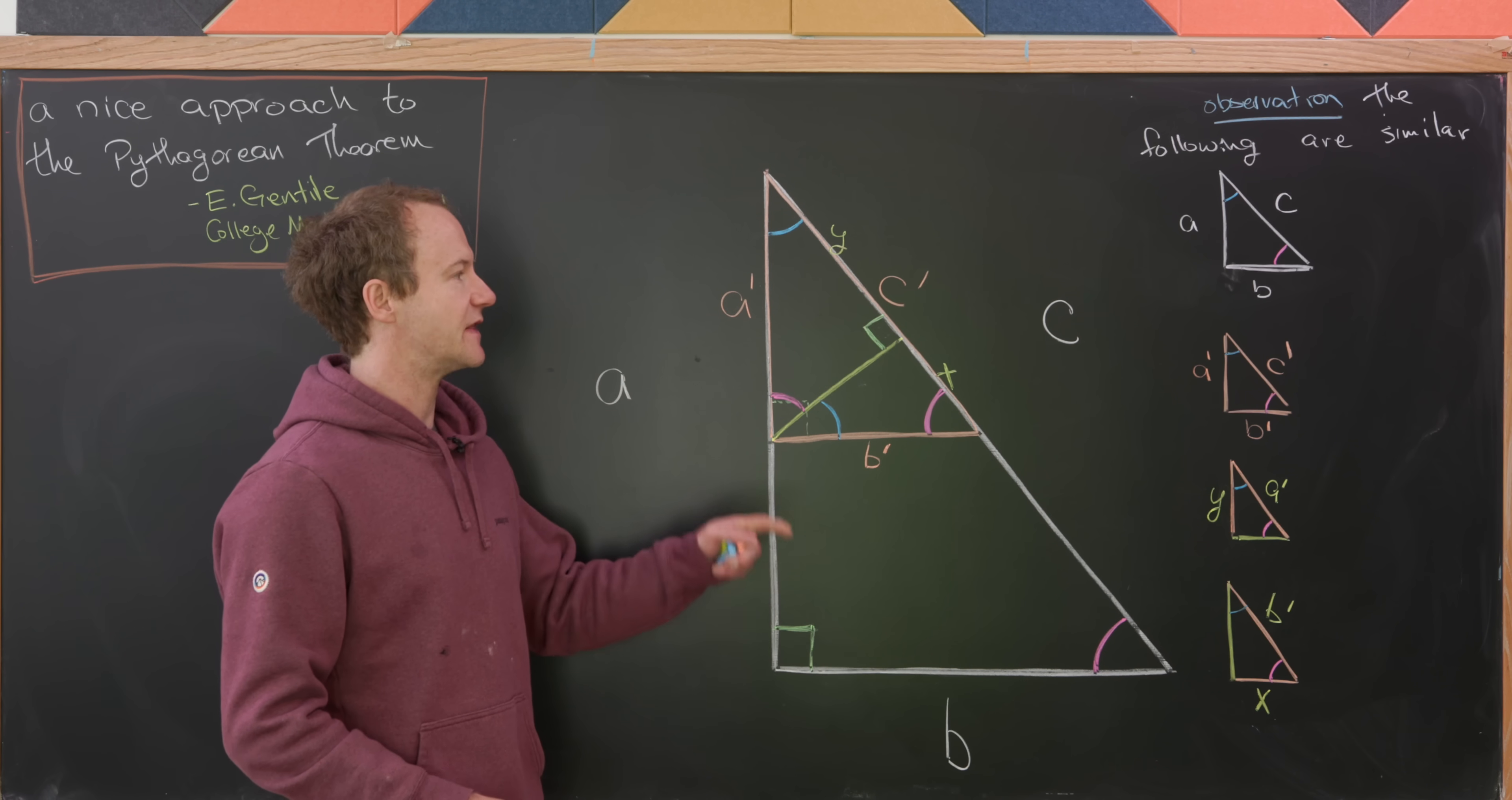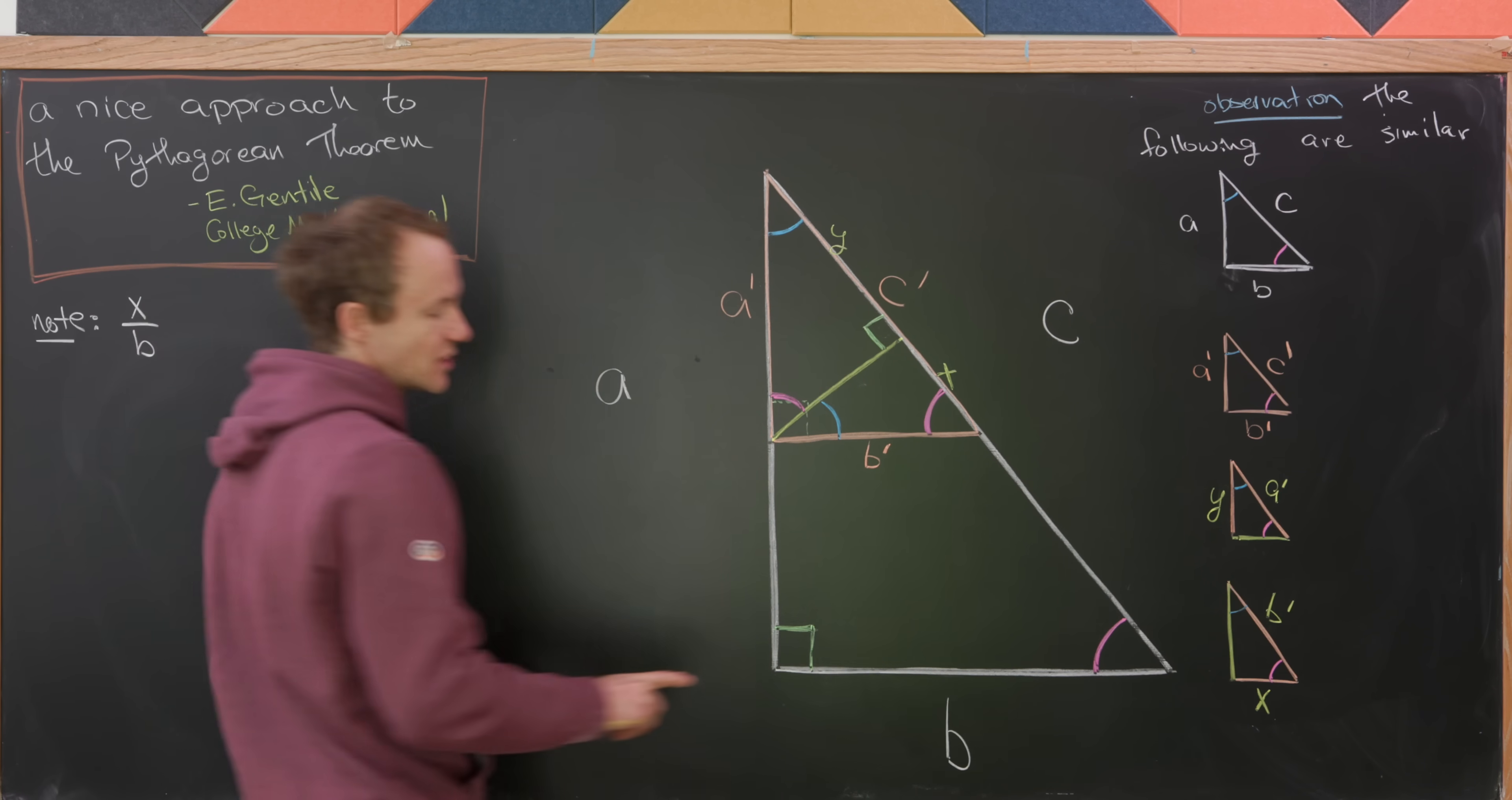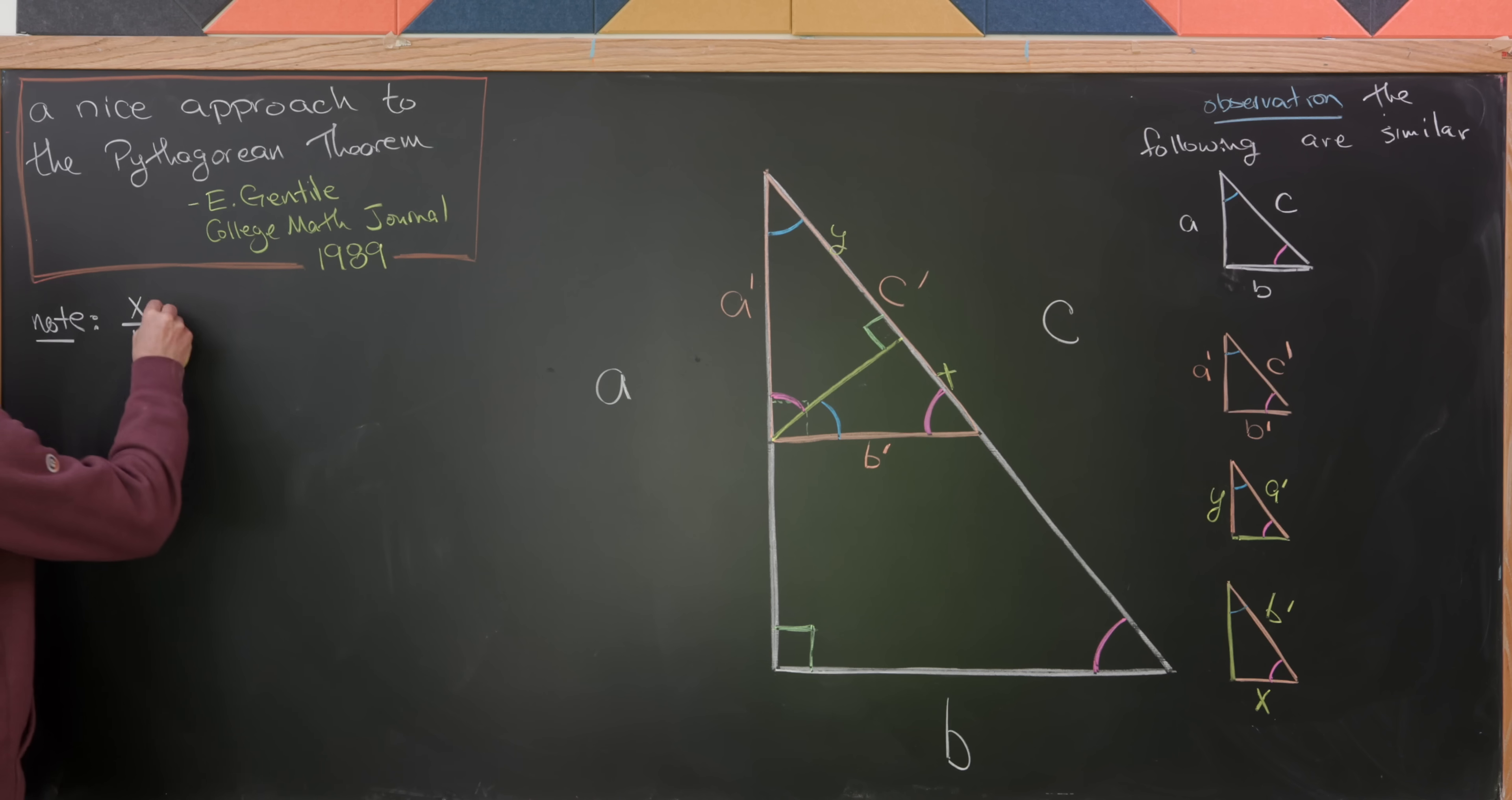Now we can apply the similarity of these triangles to get some equality of proportions of side lengths. Let's first notice that if we take x over b, that's the bottom side of this triangle divided by the bottom side of this triangle. So that means that's going to be equal to b prime over c.